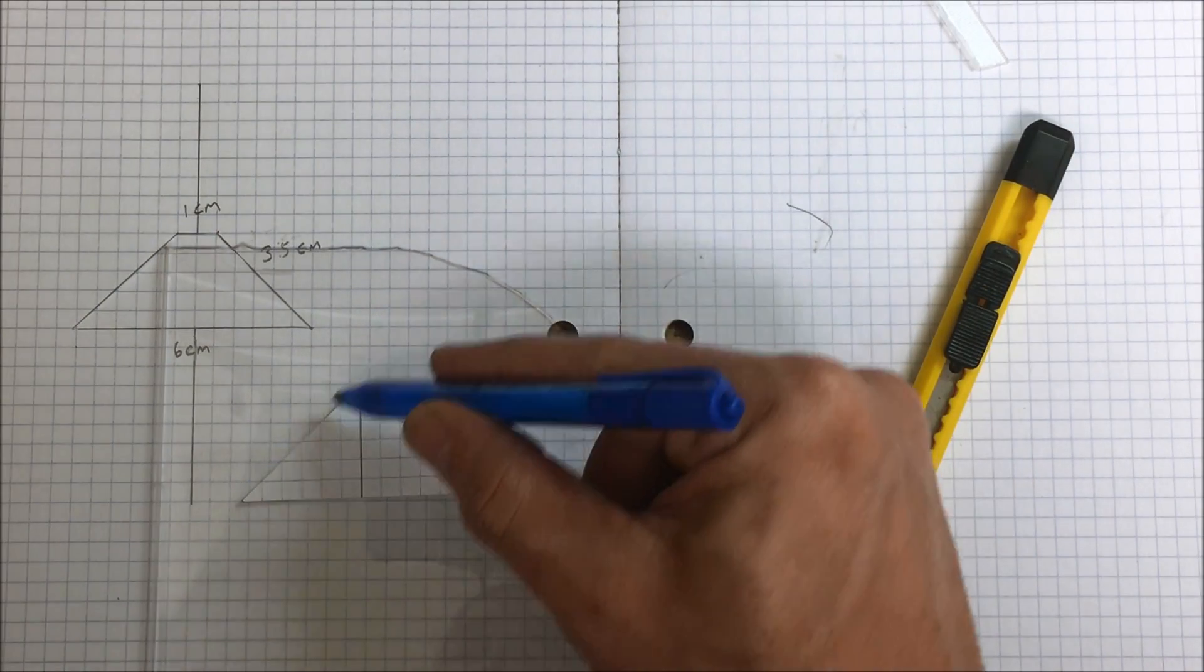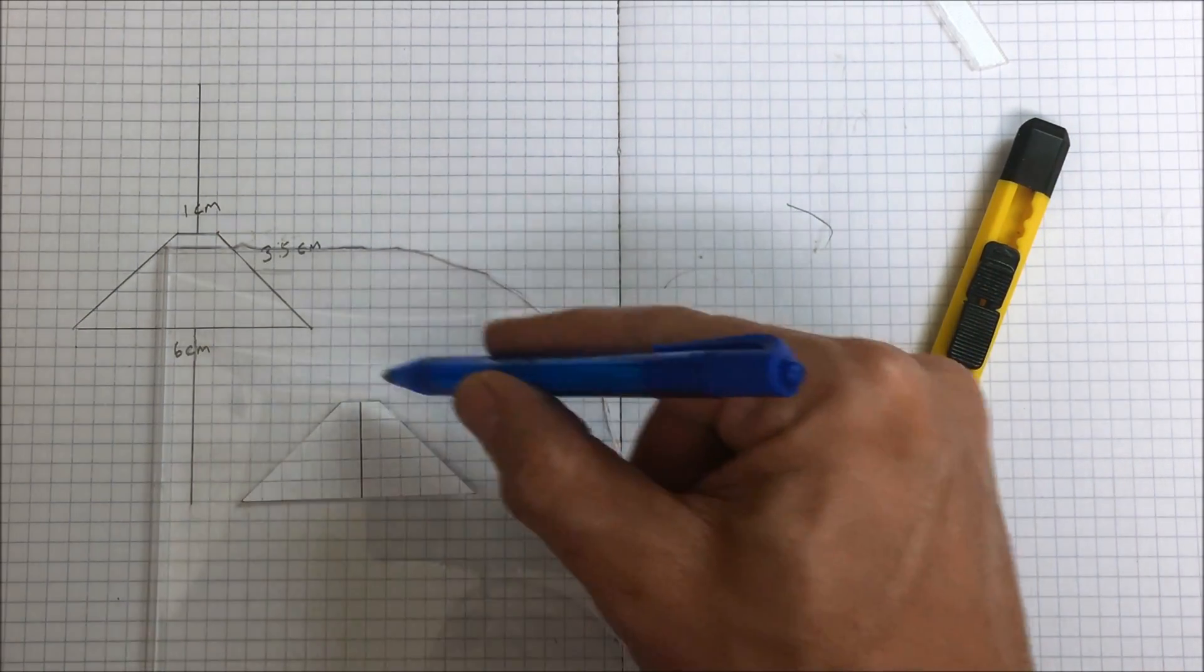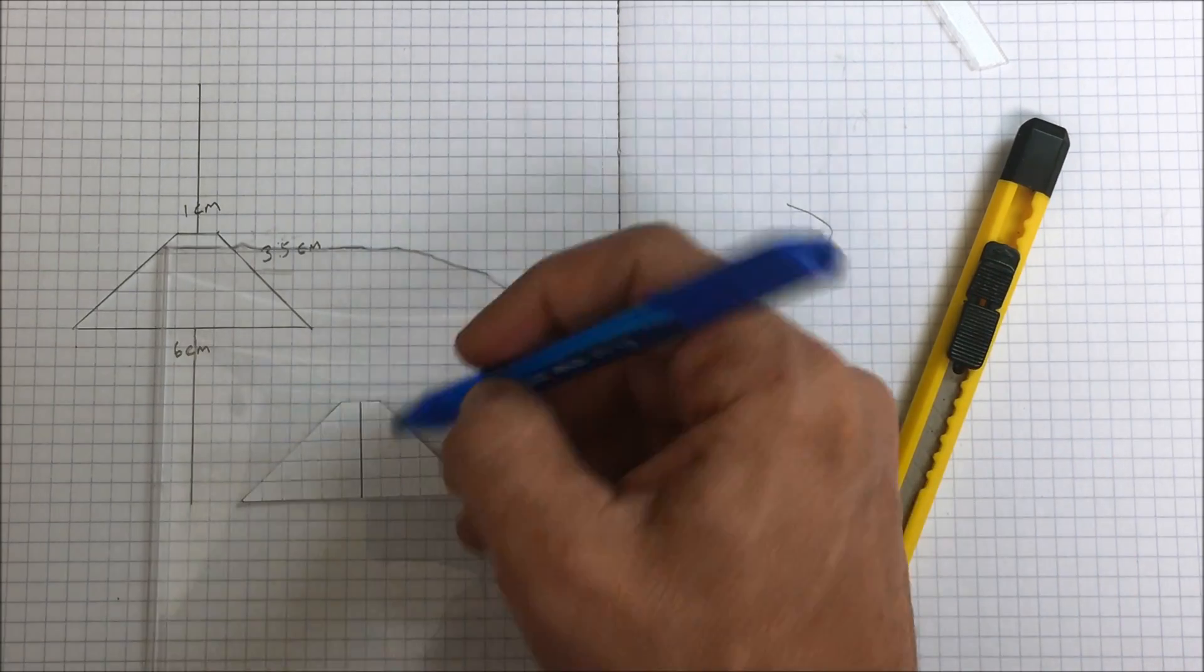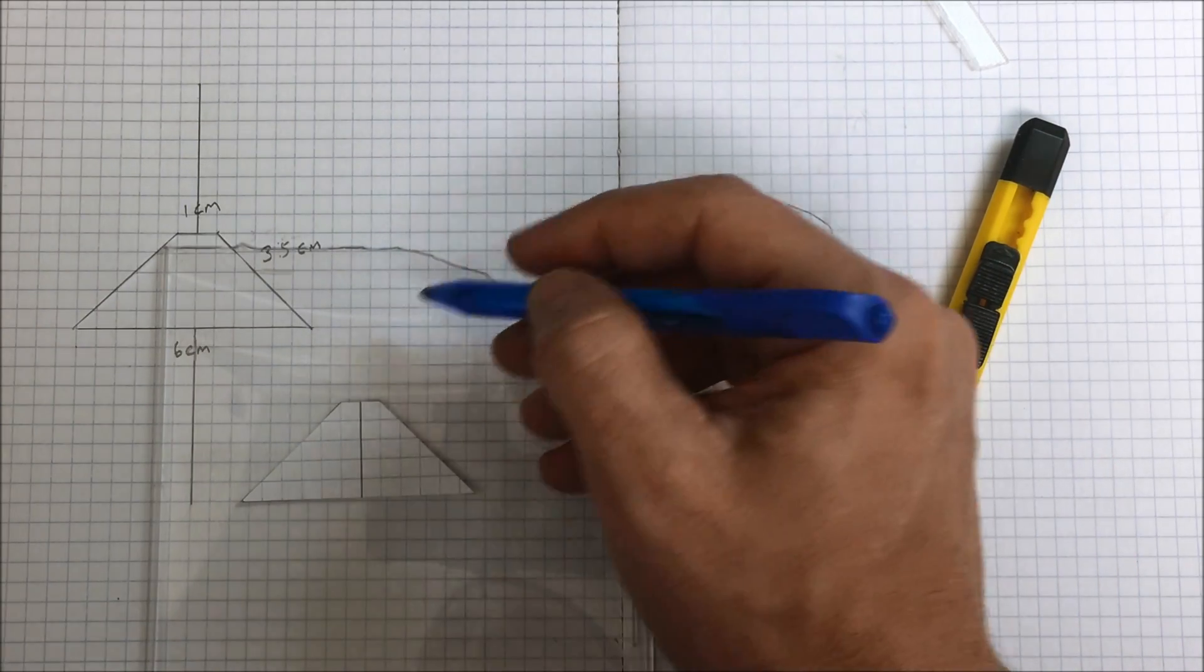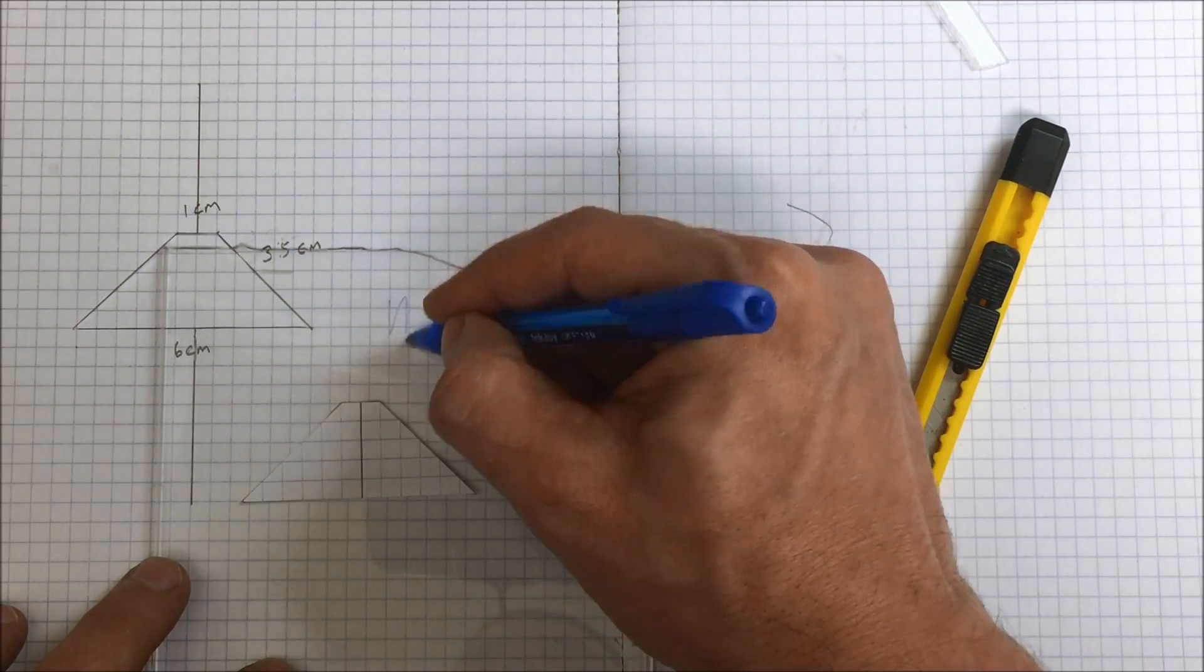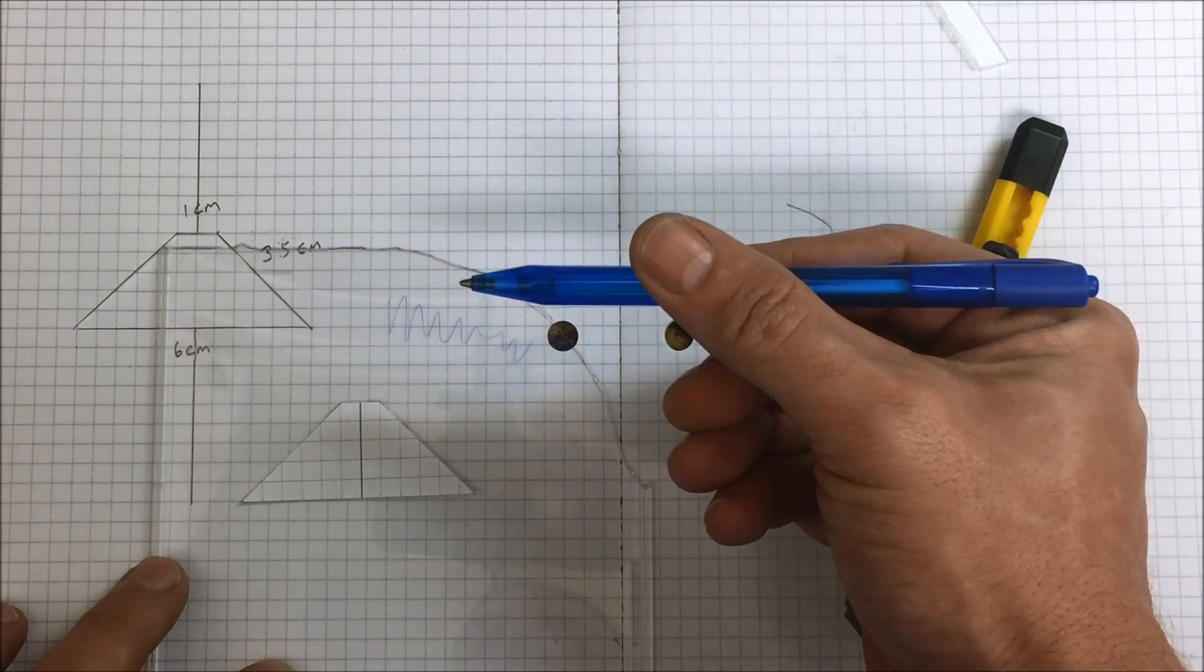Once you've got your shape cut out you're just going to take a pen, a marker, or anything like that that can actually write on the CD case. As you can see the pen actually works on the CD case.